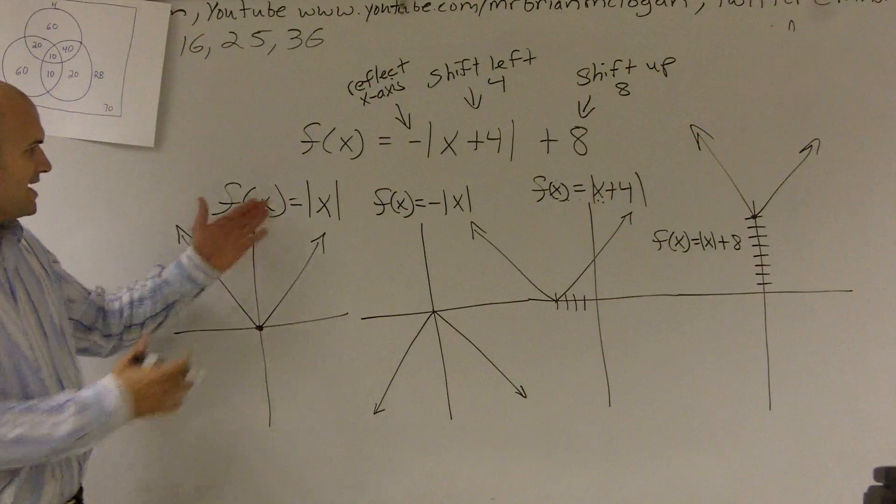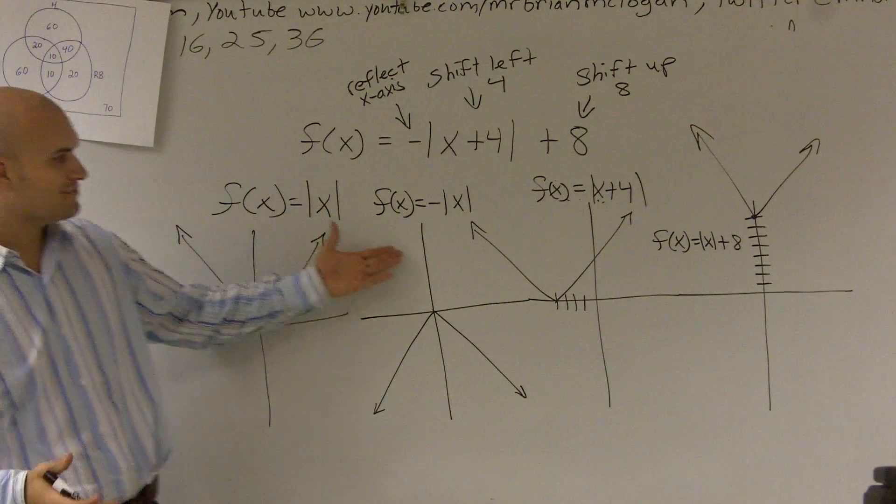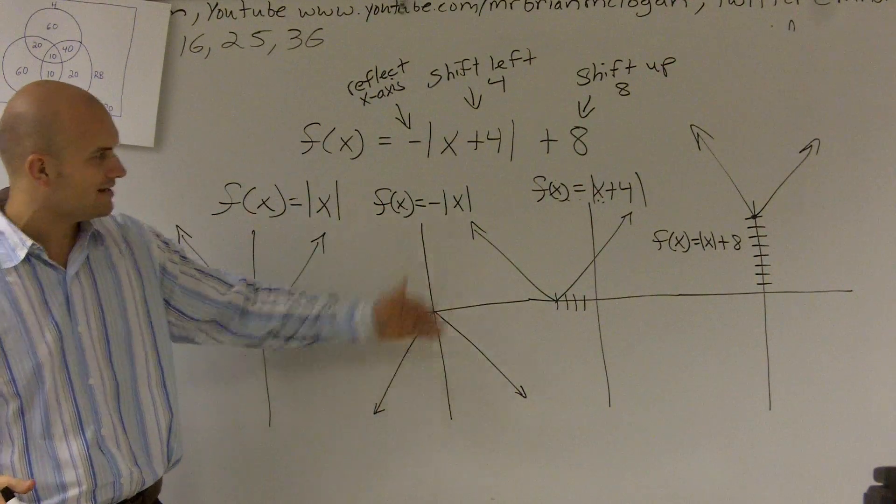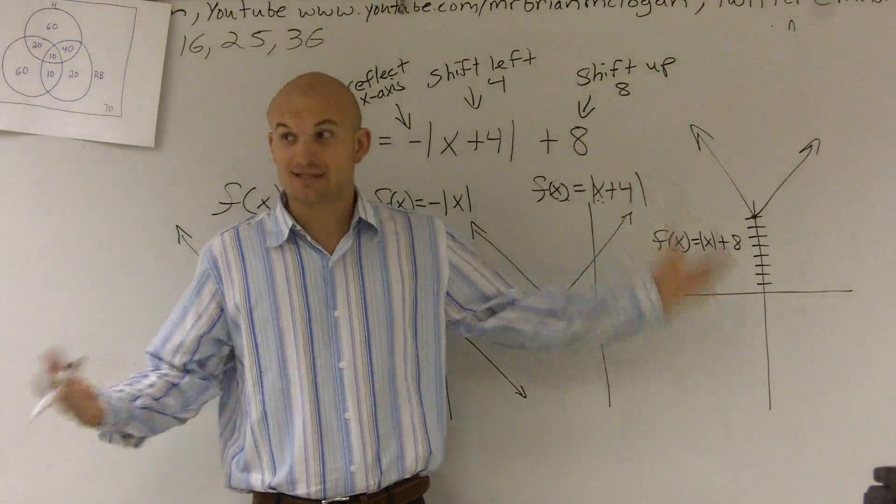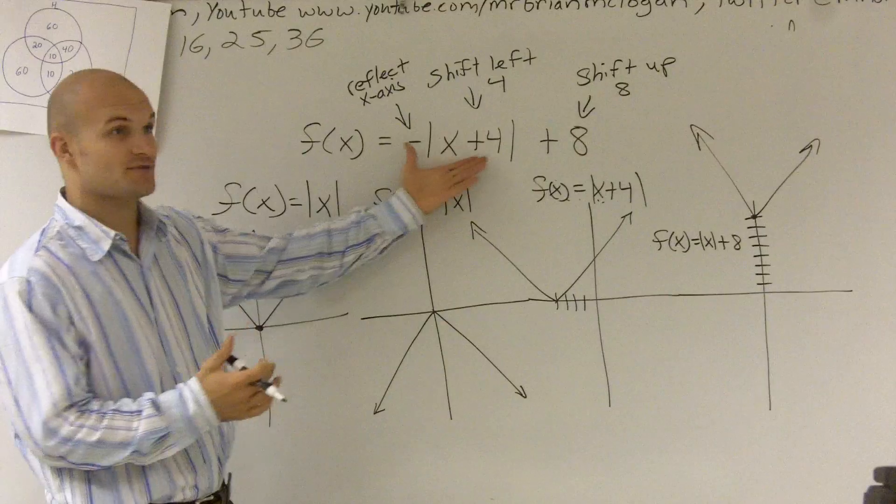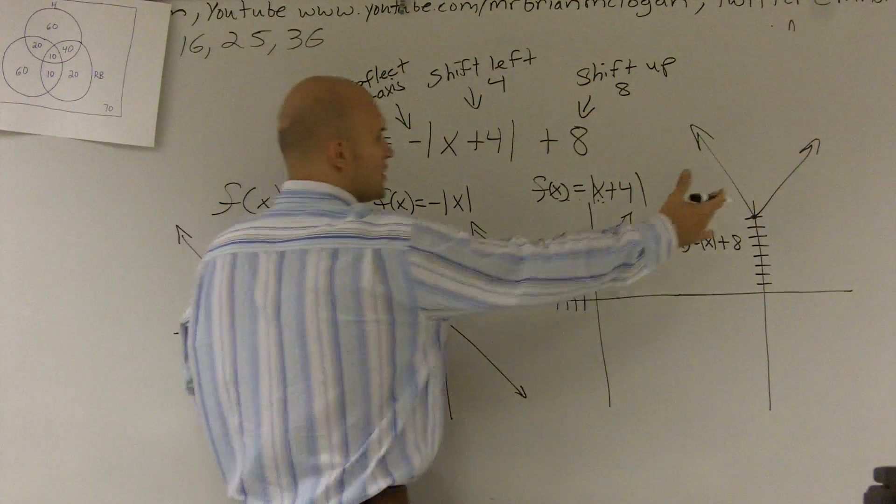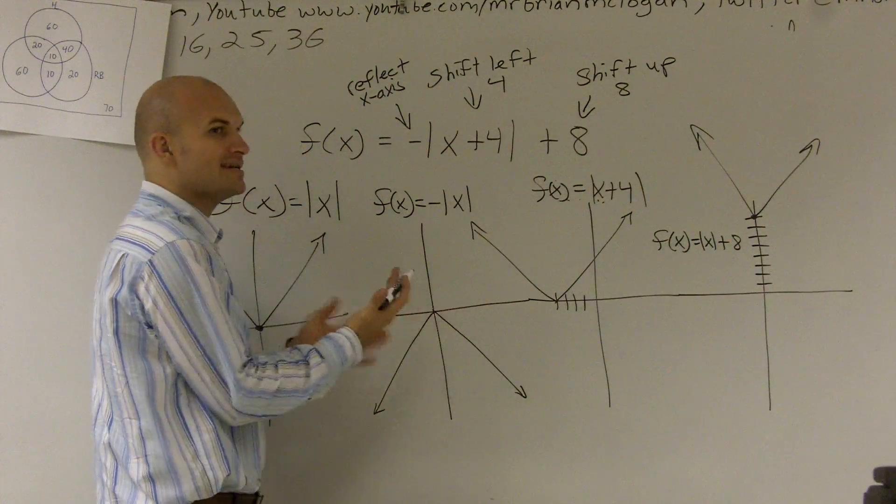So you guys can see we have our original parent graph, and I'm doing all this stuff. I'm reflecting it, I'm shifting it to the left, and I'm shifting it up 8. So there's a lot of things that are going on just in this one problem. So what we have to do is we have to kind of merge all these transformations together.